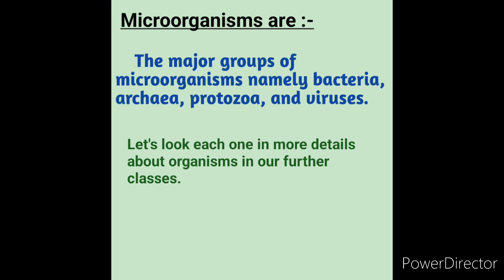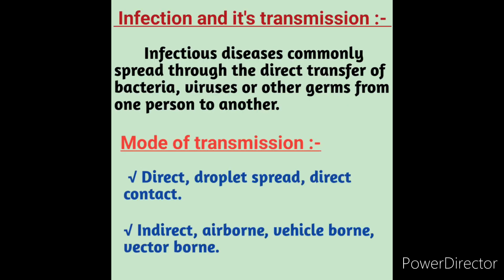We will look at each one in more detail in further classes related to the FAQs and very important questions. Now we will see infection and its transmission. Infection is a process of infecting or the state of being infected. Infectious disease is commonly spread through direct transfer of bacteria, viruses, or other germs from one person to another — this is called transmission.